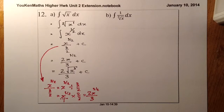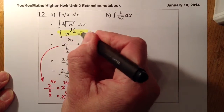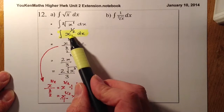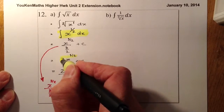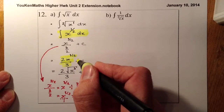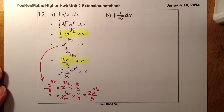Let me show how I'm going to mark this one. I'll get one mark for putting it into a form where I can start to integrate — that whole line with the integral sign, X to the power of one half, and DX. The second mark comes from the integrated expression, and the final mark for the simplified form. So that's out of 3 marks.